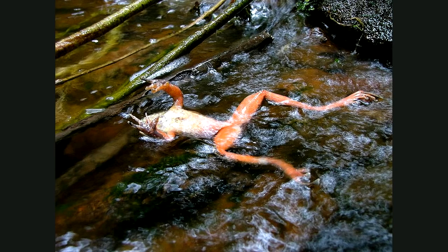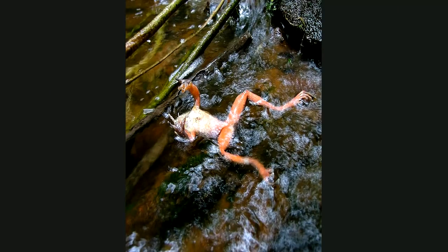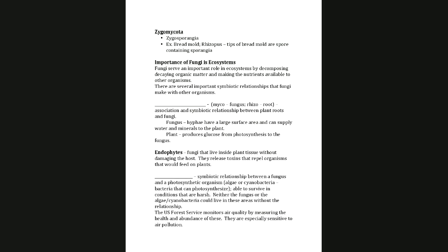Here's a frog infected by a chytrid from the group Chytridiomycota — an example of the parasitic type. The fifth group, Zygomycota, is also one you looked at in your fungi lab — you looked at Rhizopus, which is common bread mold, and saw microscopically the spores at the tips of the bread mold.